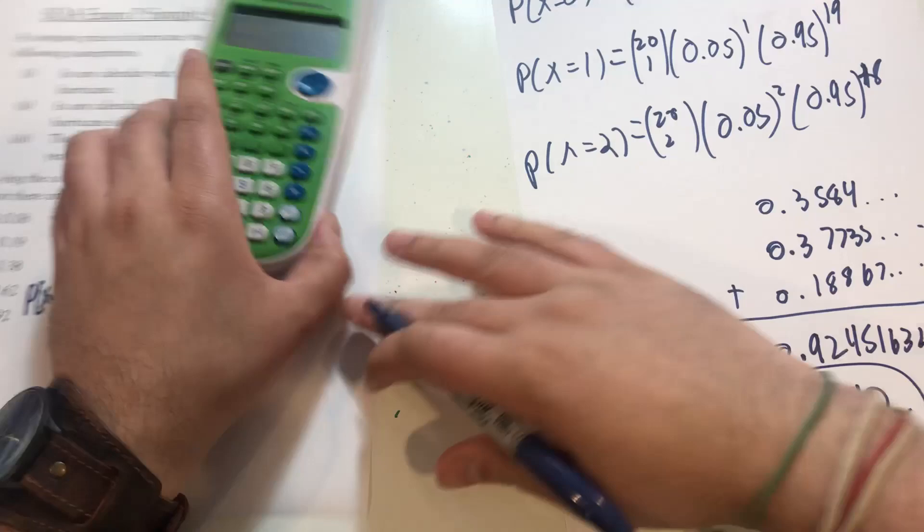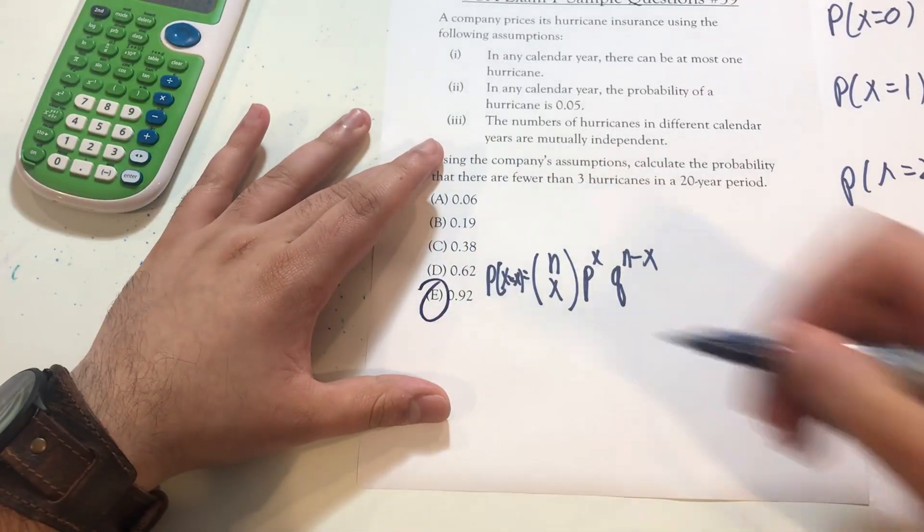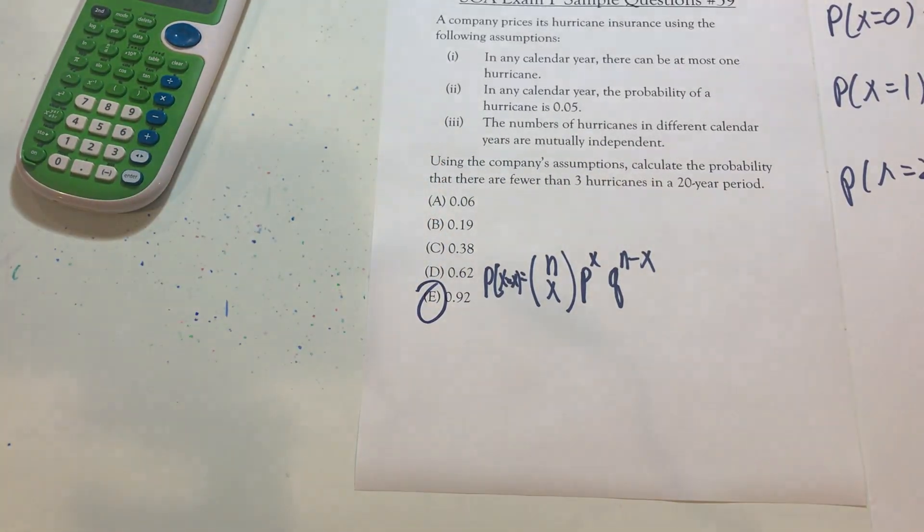So overall, very easy question. Nothing too complicated about it. You recognize, hey, binomial distribution. I got a pass-fail scenario. I know in my head, I have memorized the formula for getting the probability of a binomial distribution, and I just use it.